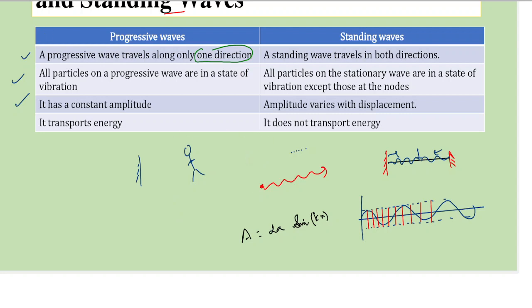Fourth difference is in case of progressive waves, it transports energy. So energy moves from one point to another point, while in standing waves, the energy is confined in a given region only, in a given space only. So here we can say that it does not transfer energy, which means the energy is confined to a given region only. So these are the differences between progressive waves and standing waves.